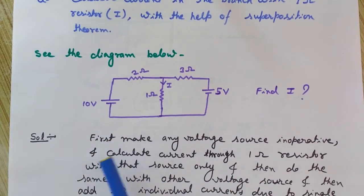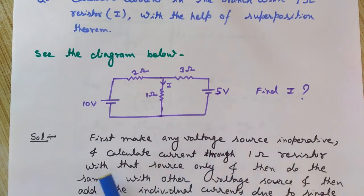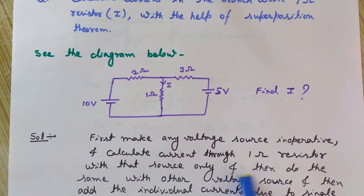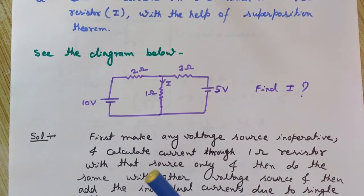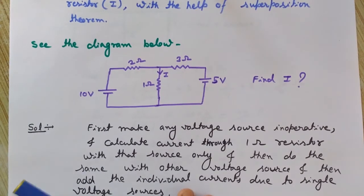First, make any one voltage source inoperative and calculate the current through the 1 ohm resistor with that source only. Then do the same with the other voltage source. Finally, add the individual currents due to each single voltage source to get the total current.